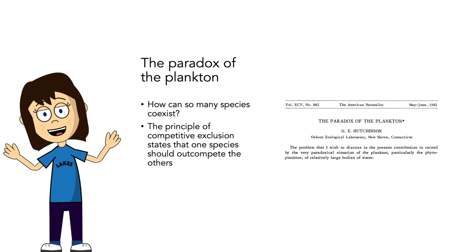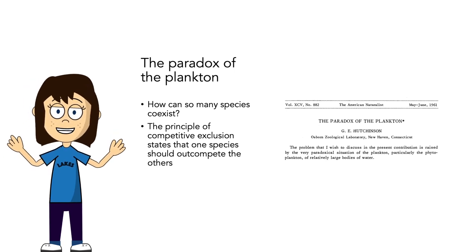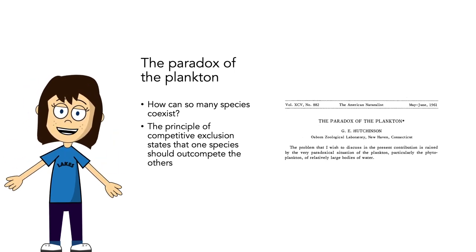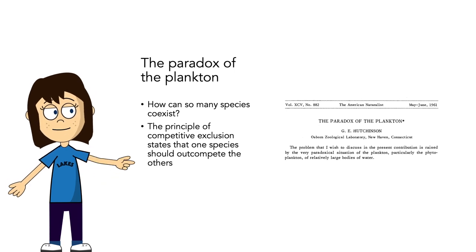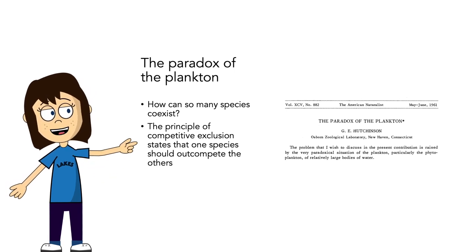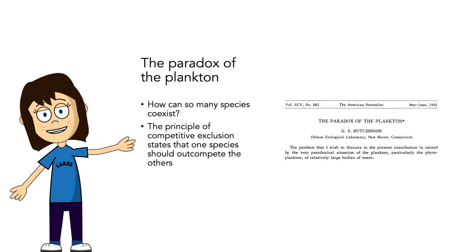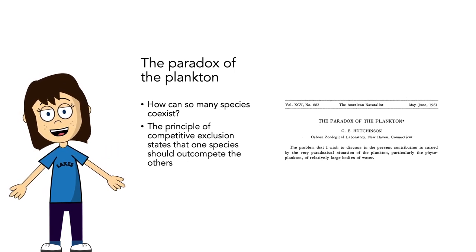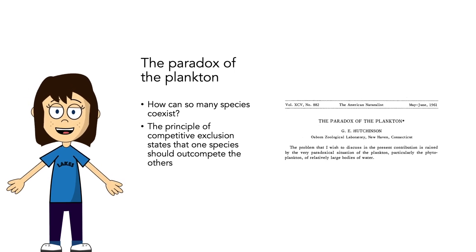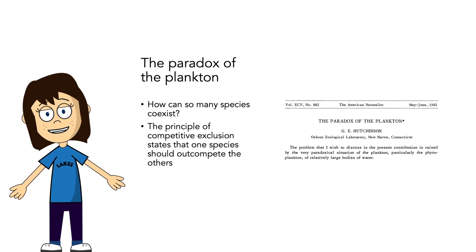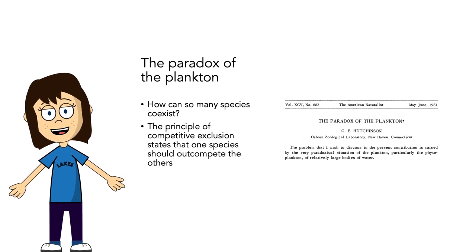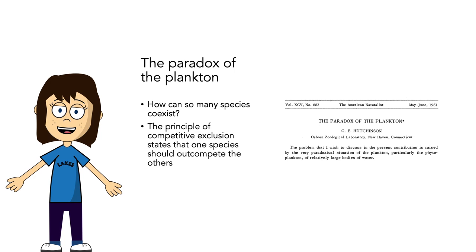So how do we end up with so many phytoplankton species? This has been a really important question in the field for a long time. There's a paper published in 1961 called 'The Paradox of the Plankton' that addresses just that: how can an ecosystem with a limited range of resources support an unexpectedly wide range of species, apparently flouting the competitive exclusion principle? There should be winners and losers that winnow down the number to a handful of the best competitors.